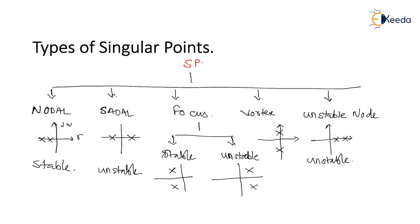For nodal point, poles are on the left half of the s-plane, hence it is stable. For unstable node, the poles are on the right half of the s-plane, hence it is unstable. Saddle point: poles are some on the LHS and some on the RHS, hence it is unstable. Focus point can be categorized into stable focus — poles are complex conjugate with negative real part — and unstable focus — poles are complex conjugate with positive real part. Vortex point: completely imaginary pole locations lying on the j-omega axis.